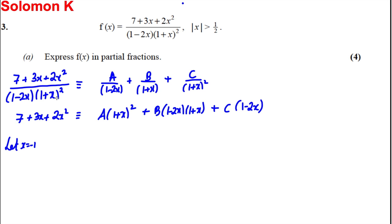Substituting in negative 1, you get 6 and that will make the first two terms disappear. If you put negative 1 in here, 1 subtract 2 times negative 1 is going to equal 3. So C is therefore equal to 2.